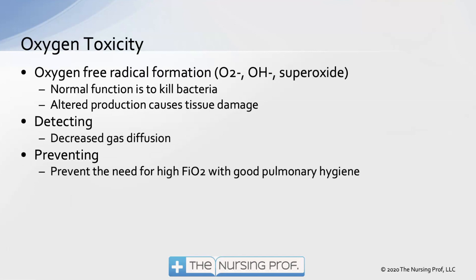Oxygen toxicity occurs when free radicals form as a result of giving oxygen to a patient who has inflammation occurring. The inflammatory process converts the additional oxygen into oxygen free radicals, which normally kill bacteria, but when inflammation is out of control, they kill healthy tissue. We detect this by seeing decreased gas diffusion and the need for a higher FiO2. Good pulmonary hygiene can help prevent it.